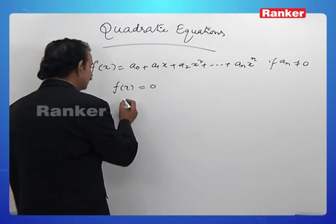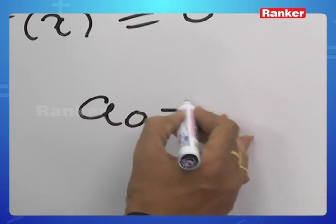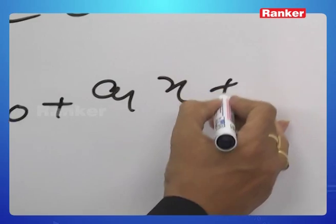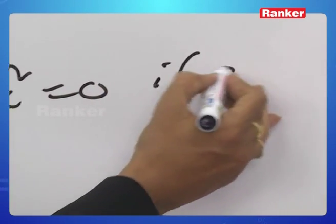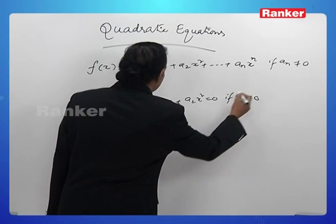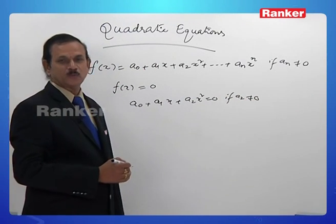Therefore, if n is equal to 2, then this becomes a0 plus a1x plus a2x² equal to 0. If a2 is not equal to 0, it is a quadratic equation.